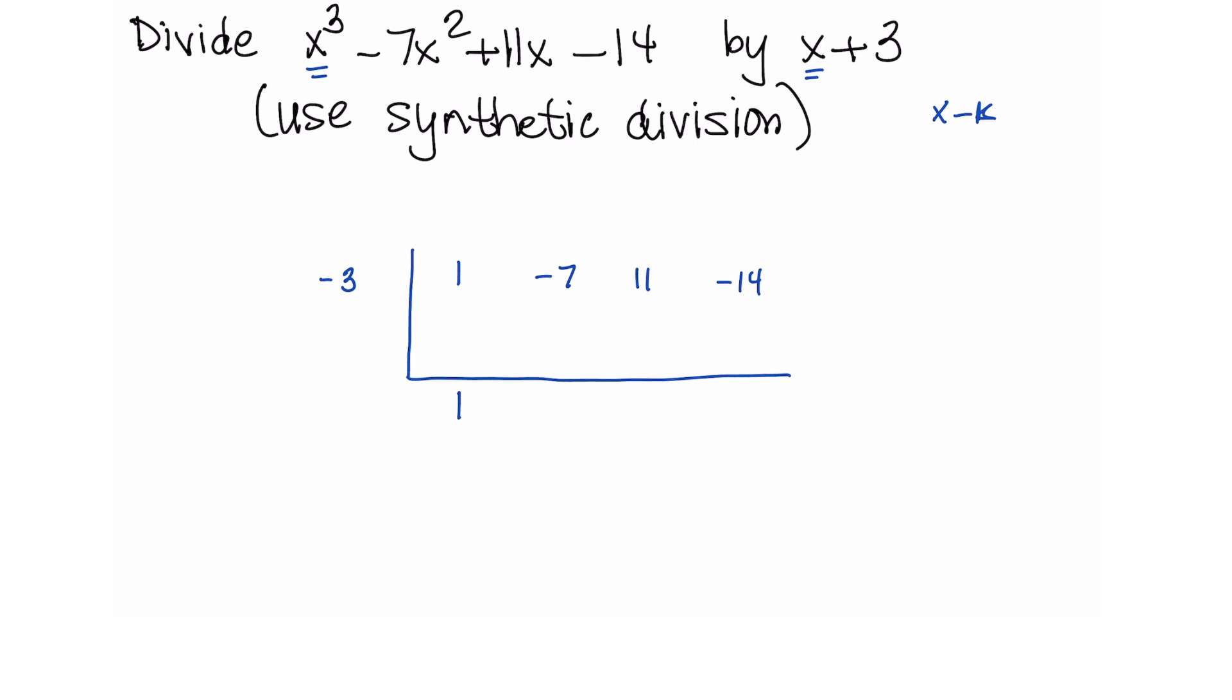So then at this point, to perform the synthetic division, we take our 1 that we brought down, we multiply it by negative 3. So I'm going to draw a line right here, multiply. So 1 times negative 3 is negative 3. And then instead of subtracting from the result, the reason why we switch the sign of the plus 3 is so that we could add instead of subtract. And then we have negative 10.